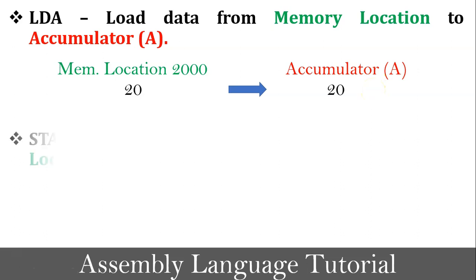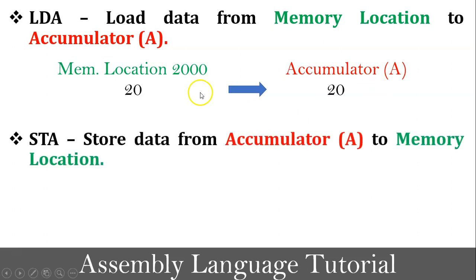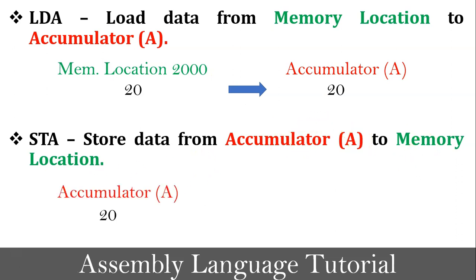The next instruction is STA. STA means store data from accumulator to memory location. For example, the value 20 is stored in the accumulator. So if I want to copy or store that accumulator value onto a particular memory location, I have to use the STA instruction. So this is the meaning of LDA and STA instruction.